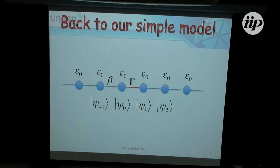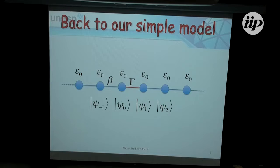Picking up where I left off: yesterday we said that for a chain of atoms where all the atoms and couplings are identical, the conductance is equal to a quantum of conductance — 2e²/h. Since the problem is a scattering problem, I can do a scattering approach to calculate the transmission on a system where I change one of the couplings, for example, to introduce a scattering center. So now not everybody is the same — there's a slight difference in the problem.